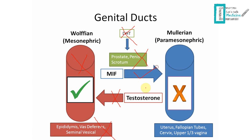However, MIF comes from Sertoli cells, so that function is unaffected. The Müllerian duct will still regress — no uterus, no fallopian tubes, no cervix, no upper one-third of vagina. This patient will typically present with female external genitalia but will come in reporting primary amenorrhea. After scans and tests you find she has no uterus, no fallopian tubes, no cervix, and no upper one-third of vagina.